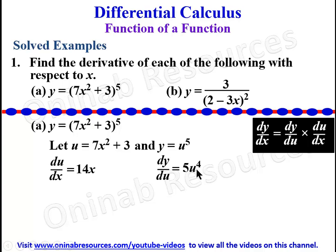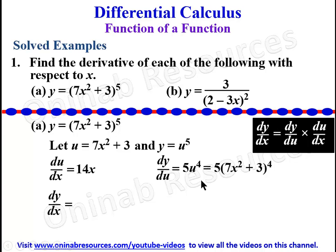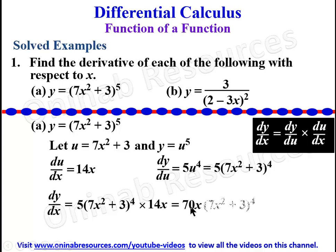For dy/du, we differentiate y = u⁵ with respect to u: multiply by the power and reduce the power by one, giving 5u⁴. We substitute back u = 7x² + 3, so dy/du = 5(7x² + 3)⁴. By the chain rule, dy/dx = dy/du × du/dx = 5(7x² + 3)⁴ × 14x = 70x(7x² + 3)⁴.